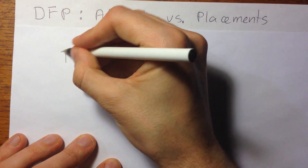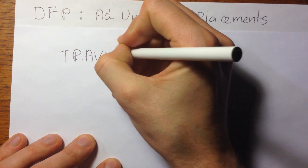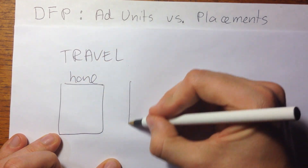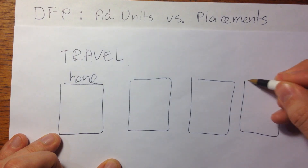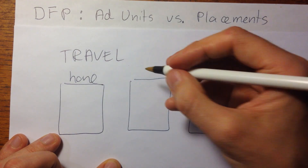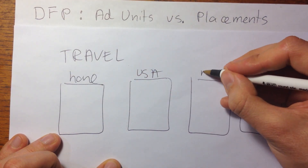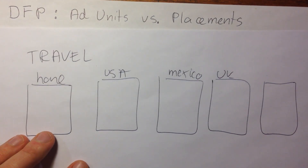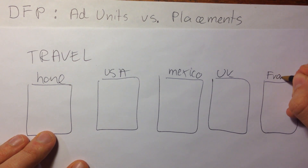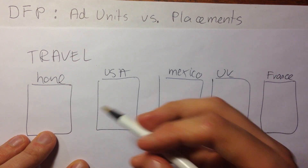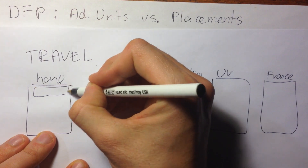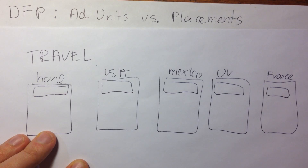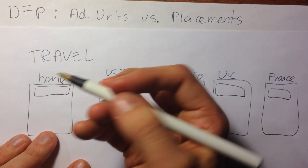Let's say you have a website about travel. You have a home page and you have pages about individual cities and countries such as USA, Mexico, UK and France. On each of those pages, you will place an ad unit. To target an individual page, you will have to name each of these ad units differently.